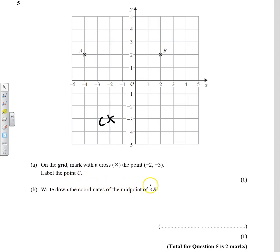Write down the coordinates of the midpoint of AB. So in other words, halfway between A and B. Okay, well we've got one, two, three, four, five, six squares. So if we go three in, one, two, three, that point there is the midpoint.